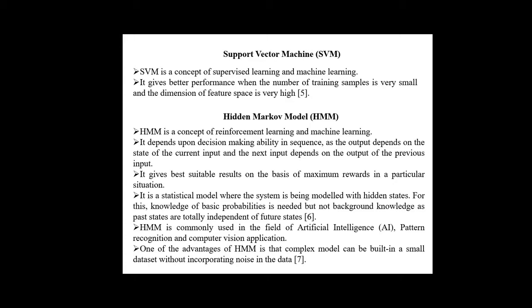Hidden Markov Model (HMM) is a concept of reinforcement and machine learning. It depends upon decision-making ability in sequence. Here, the output depends on the state of the current input, and the next input depends on the output of the previous input. In this model, complex models can be built on a small dataset without incorporating noise in the data. It is used in pattern recognition and computer vision applications.